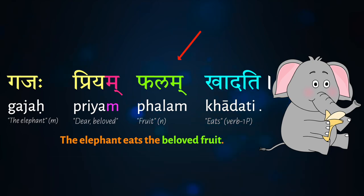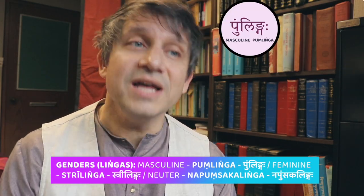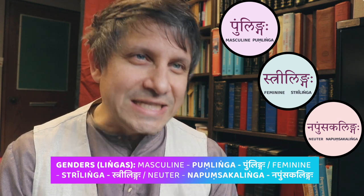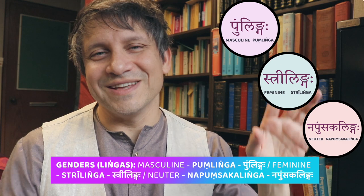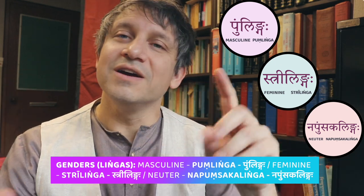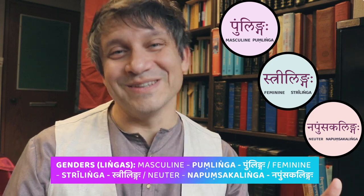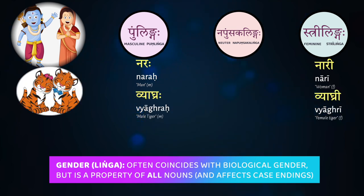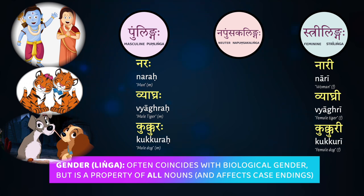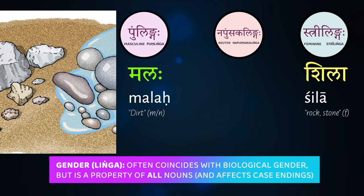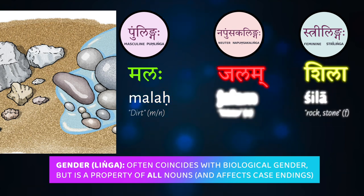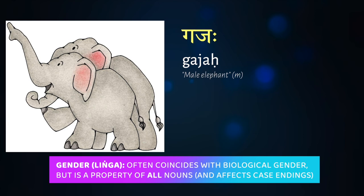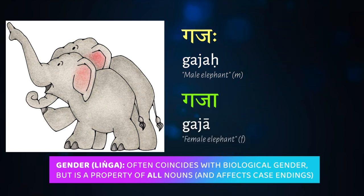The Sanskrit terms for the three genders are 'pun-linga,' 'stri-linga,' and 'na-pun-saka-linga.' 'Pun' is an old Vedic word meaning masculinity; 'stri' is the word for woman — so literally masculine marker and feminine marker. The third, 'na-pun-saka-linga,' means the not-masculine marker. Grammatical gender will often correlate with biological gender for gendered entities like humans, tigers, cats, and dogs, but every noun has a gender no matter what — even rocks, water, and dirt — and you just have to learn the gender alongside the word's meaning.